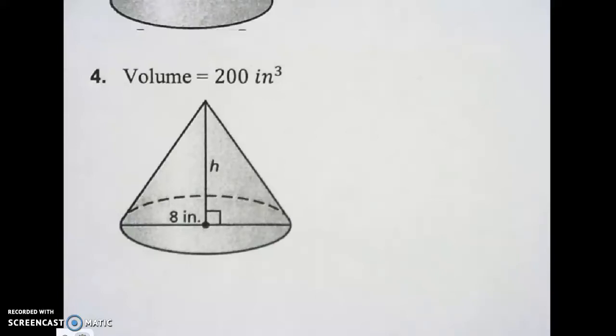Find the missing dimension of the cone. Round your answer to the nearest whole number. Okay, this is Southwest 212. Let's do some math.